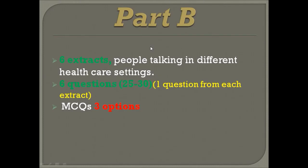Now let's discuss OET listening part B. Part B comprises of six different extracts. In each extract, people are talking in a different healthcare setting — discussing a healthcare problem, an environmental problem, a patient problem, or a laboratory problem. You will hear each extract and answer one question per extract, giving six questions total. The questions are MCQ type with only three options each.